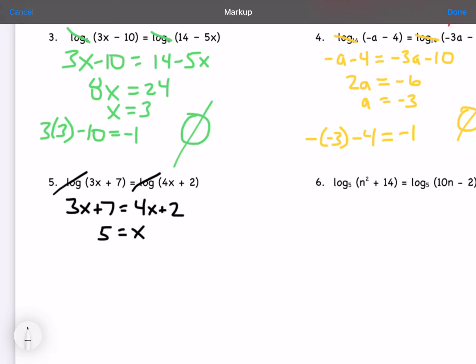So now, just looking at it, this one should work. 3 times 5 is 15, plus 7 is 22. So x equals 5.